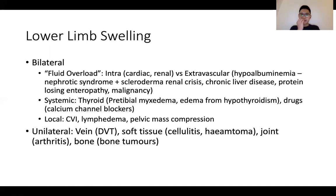In terms of systemic disorders causing bilateral lower limb swelling, thyroid disorders — both Graves' disease, where they have pretibial myxedema, and hypothyroidism, where they get lower limb edema — are conditions to think about. Don't forget drug-related causes such as calcium channel blockers. For the unilateral group, I think of the different structures in the lower limb: neurovascular structures such as veins causing DVT; lymphatic drainage problems causing lymphedema on one side; soft tissue causes like cellulitis or hematoma; joints with arthritis; and bones with bony tumour. If it's a unilateral lower limb swelling, find out exactly which part of the limb is affected.